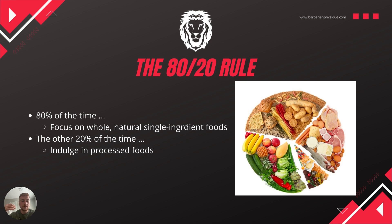The other 20% of the time you can definitely indulge in junk foods, sweets, and processed foods — foods that have more than one ingredient. Most delicious pastries, donuts, pizzas, burgers, fries, and dairy usually have more than one ingredient because they're deep fried or have a bunch of added ingredients, artificial flavorings. And that's totally fine, because it's all about balance and a sustainable diet.